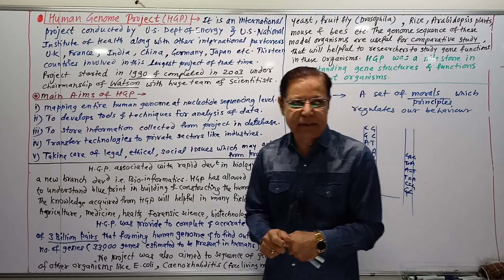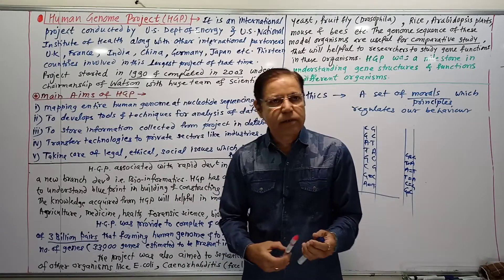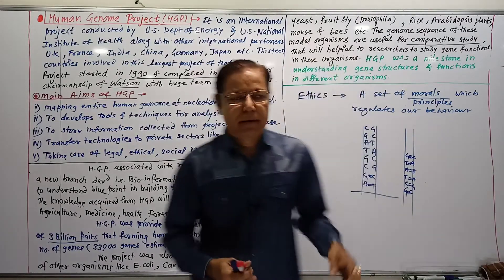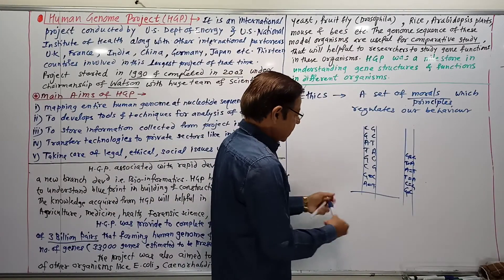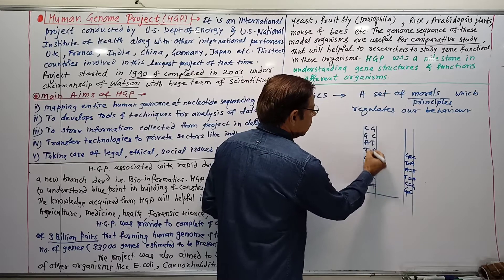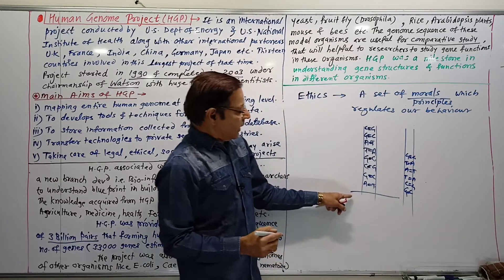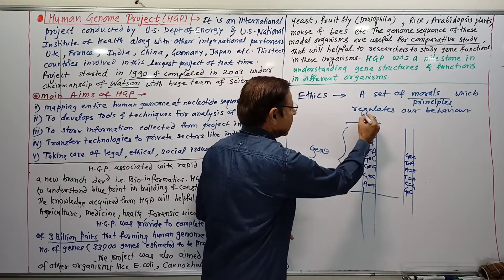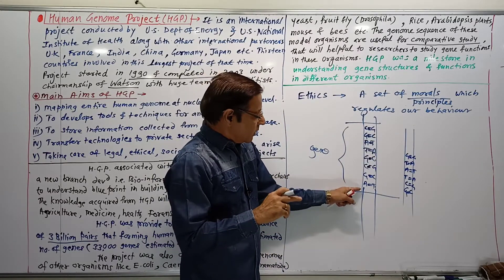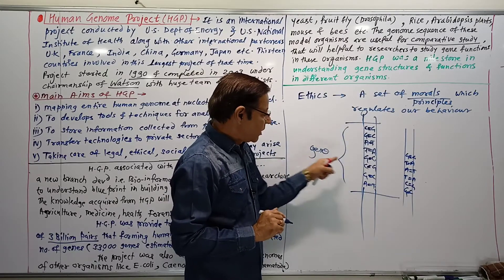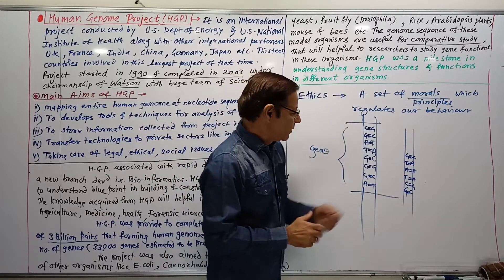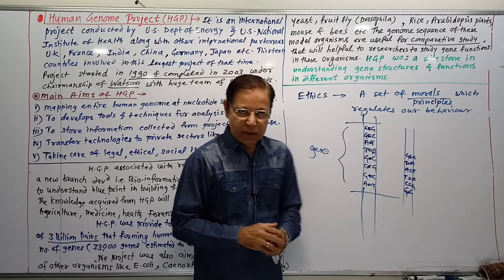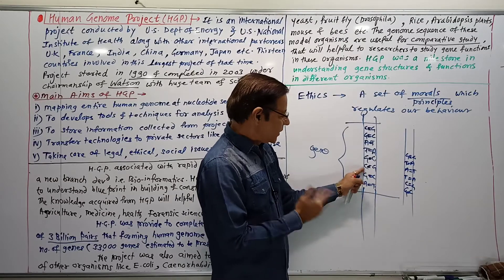With a huge team of international scientists, what are the main aims of this large project? First is mapping the entire human genome at nucleotide level. Suppose this is a DNA with nucleotides or base pair sequences, and each gene—suppose this one is a gene of DNA. We can finalize the sequence of a particular gene by the study carried out by these countries. This is the base pair sequence or nucleotide sequence present on the DNA: suppose ATGC, CGGC, TA, etc.